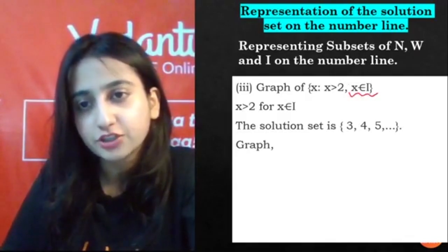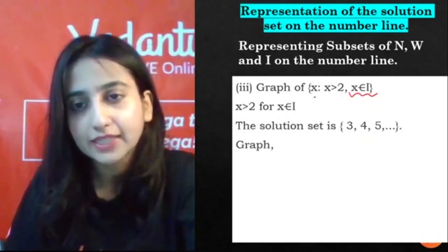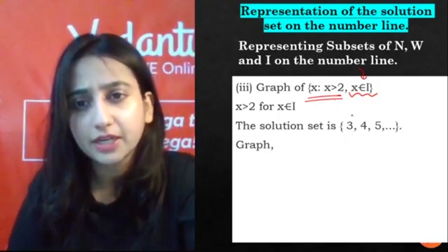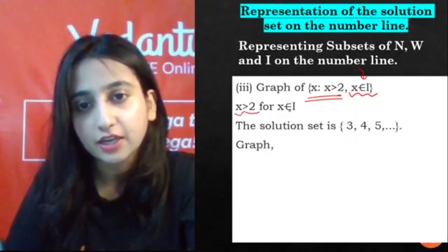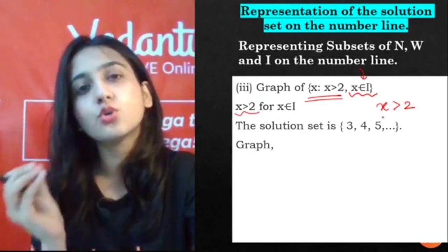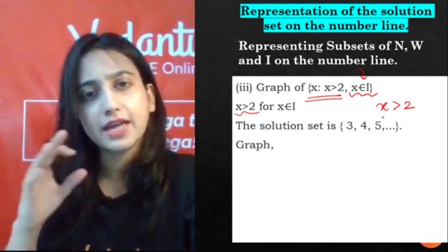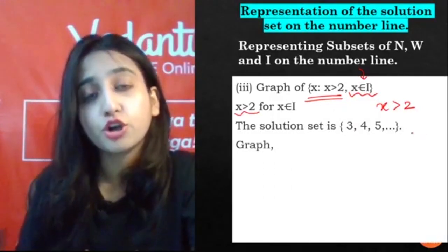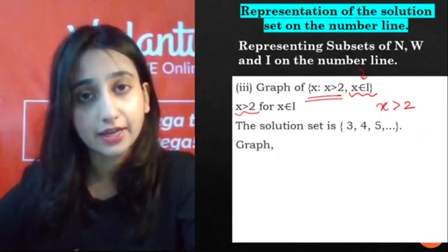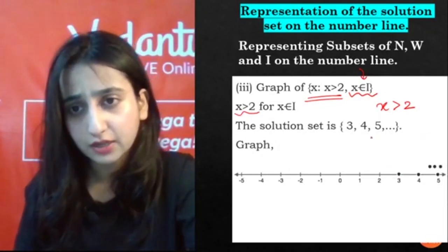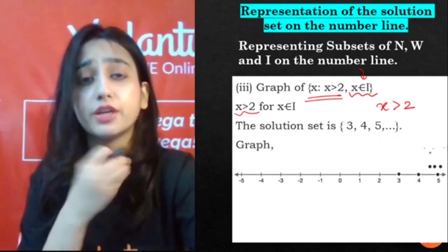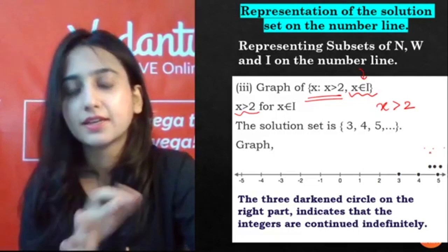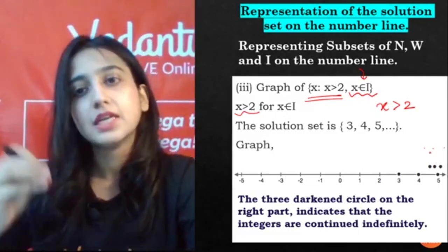Now here again we changed the domain to integers. I had told you how to write this, we did it in the previous session. Now the domain is integers and the condition has also changed. X is greater than two. How many integers are greater than two? Three, four, five, six, seven, eight up to infinity. So what came in this set? Three, four, five dot dot dot, which means it's going on indefinitely. So what will the graph be? Darken three, darken four, darken five, and after that put these three dots, which means it is going indefinitely. The numbers continue ahead.